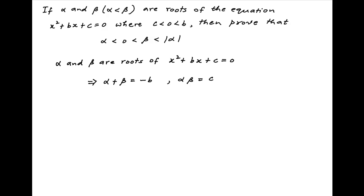But we are given that c is negative. Therefore, the product of alpha and beta is negative. When the product of two numbers is negative, they have opposite signs. Therefore, alpha and beta are of opposite signs.